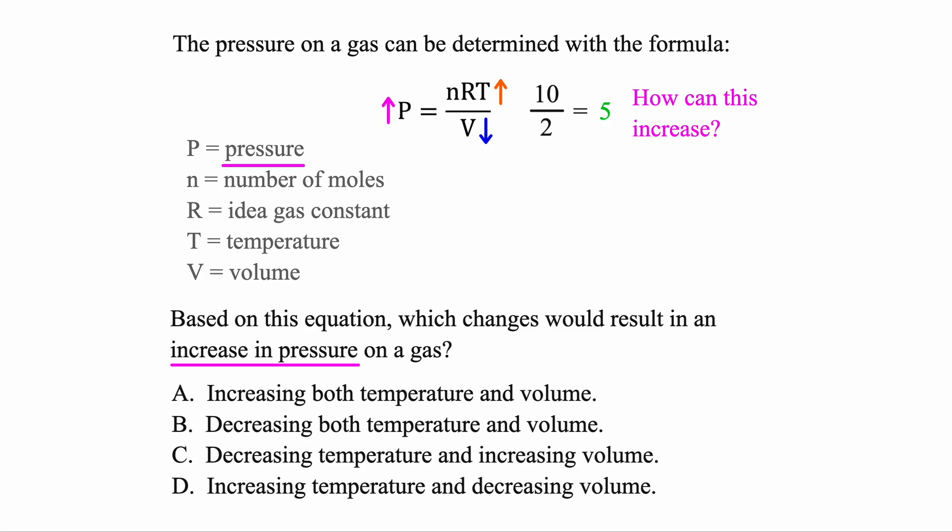But this time, we want the whole thing to increase. Let's make the top number a little bigger. We'll go from 10 up to a 12 this time. Then 12 divided by 2, we get 6. So by making the top value bigger, it does result in an overall increase here.